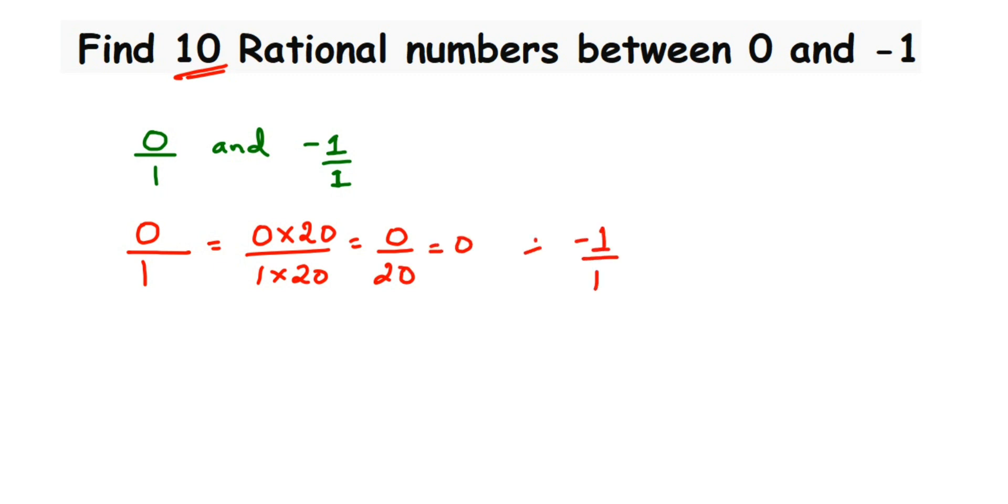Same thing with the second number. Multiply by 20 in the numerator and denominator because the denominator has to be the same. You'll get -20/20.